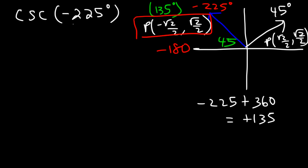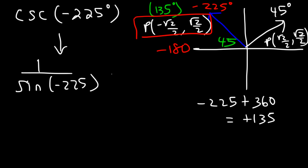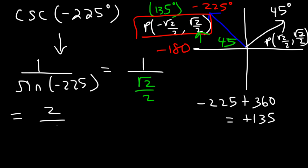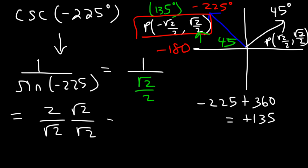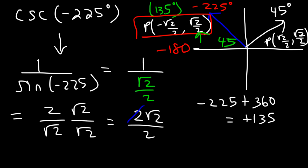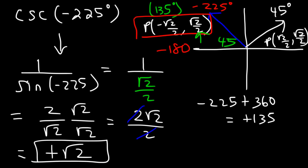Now we can evaluate cosecant of negative 225. Cosecant is 1 over sine, and sine of negative 225 is the same as sine of 135 since coterminal angles have the same trigonometric value. Sine is associated with the y value, so that's positive √2/2. Flipping it gives 2/√2. After rationalizing — multiplying top and bottom by √2 — we get 2√2/2, and these cancel, giving a final answer of positive √2. That's cosecant of negative 225.